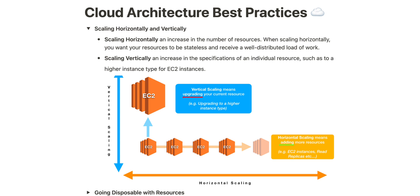Vertical scaling, on the other hand, is like giving your friend a superpower upgrade. Instead of inviting more friends, you enhance the abilities of the ones you have. In cloud terms, you upgrade individual resources — like boosting a regular car with a supercharged one. This helps your application handle more complex tasks.